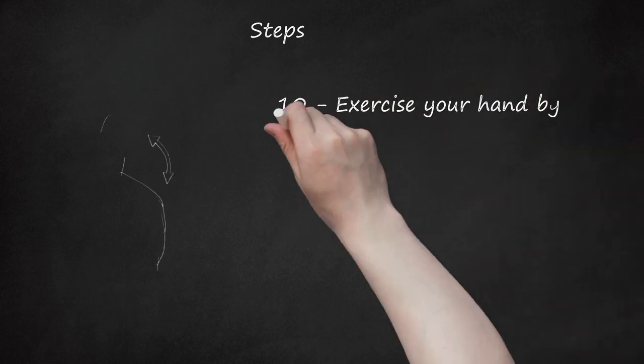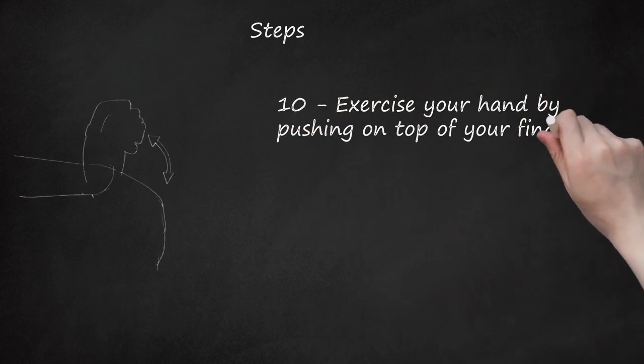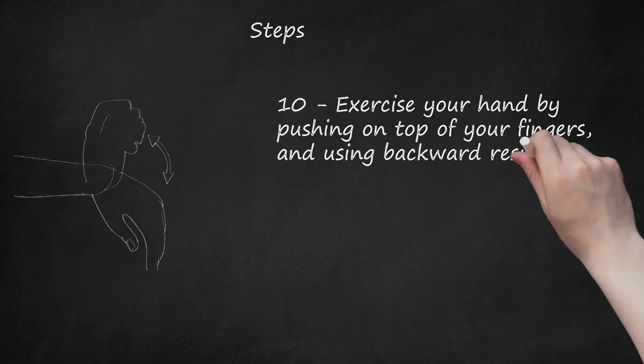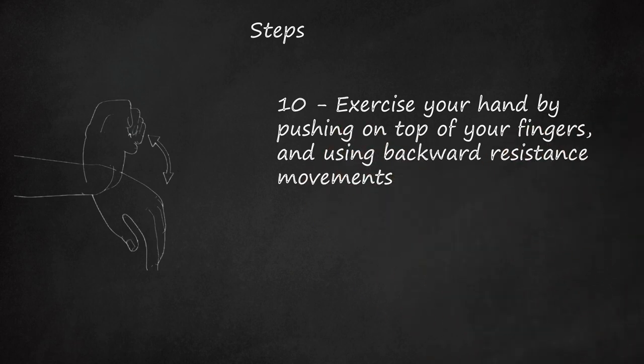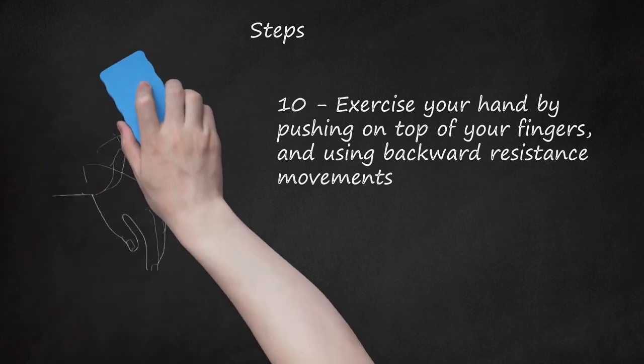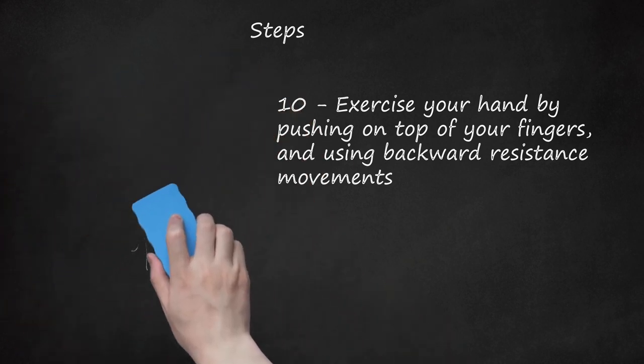10. Exercise your hand by pushing on top of your fingers and using backward resistance movements. Do a minimum of 15 reps for each hand at least 6 times every day. This simple exercise will prevent you from developing carpal tunnel finger problems in the future. Even if you don't have any problems right now, you may prevent pain later in life by doing a few good exercises.